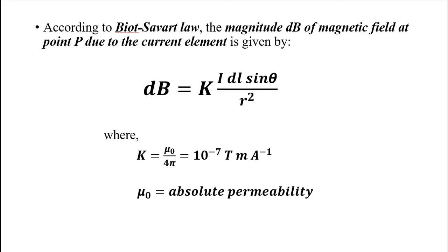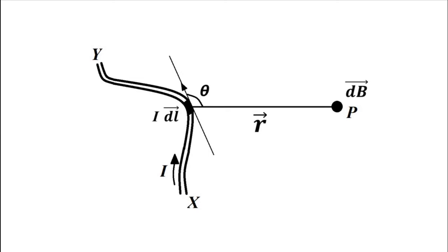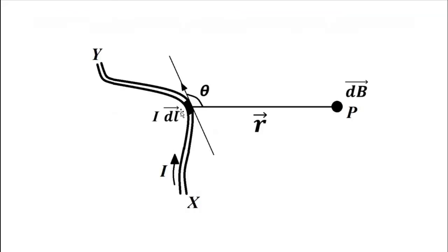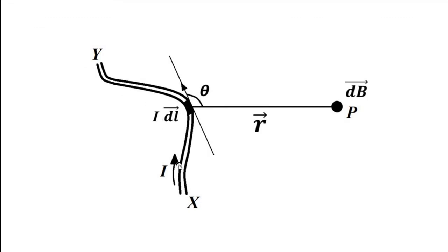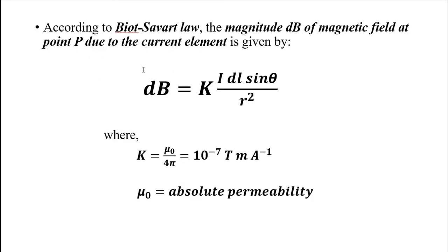When we integrate this over the whole length, we get the total magnetic flux density. The whole wire XY is divided into small current elements I·dl — each small portion of length dl covers the whole wire. For each portion dl, we draw a tangent to find the dl vector and find the angle it makes with the position vector r to point P. The small portion of the magnetic flux density dB at that point follows the same rule: k · I·dl · sin θ / r².